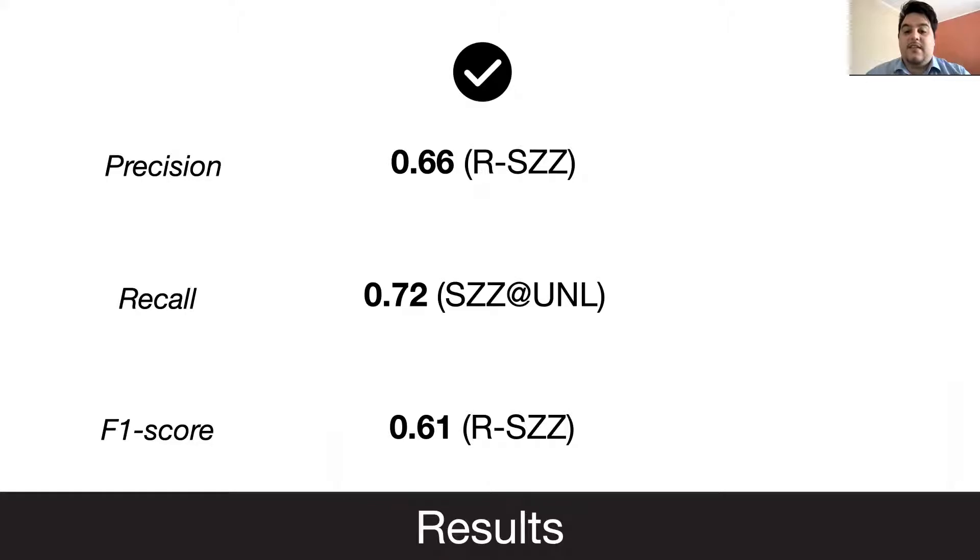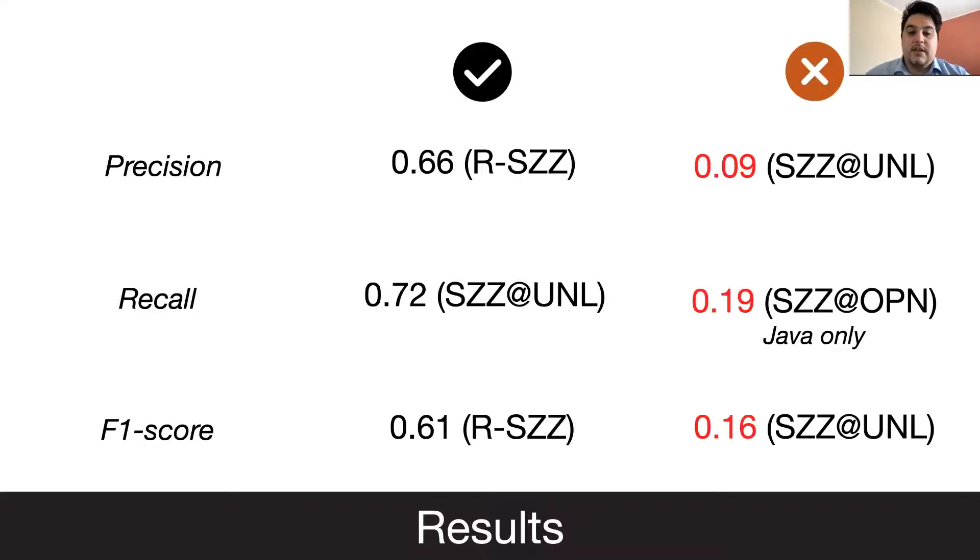So, a total of nine different SZZ variants are tested, where the R-SZZ variant is the best overall, and the open source implementation, SZZ Unleashed, is the best in terms of recall. The R-SZZ variant takes the most recent commit as bug-inducing change. But, SZZ Unleashed also has the worst score in terms of precision, and consequently also in terms of F1 measures. So, the results show that there is still a lot to do in terms of improvement.